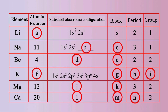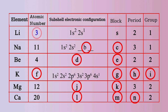The atomic number of an element is the total number of electrons in its various subshells. So we can write the atomic number of Lithium as 3. The atomic number of Sodium is 11, so the remaining 7 electrons are filled in the following order: 2p6, 3s1. As the last electron is added in the s subshell, Sodium belongs to s block.